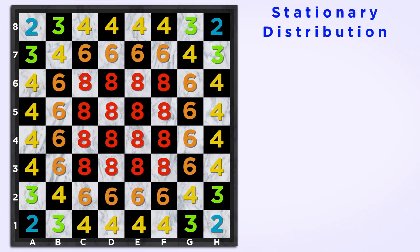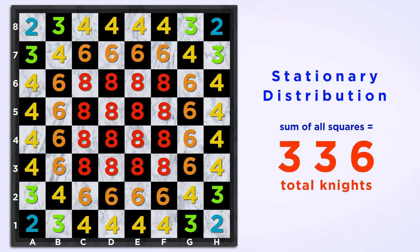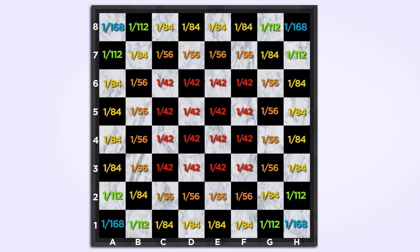This collection of knights is very close to the stationary distribution. All we have to do is figure out what fraction of knights are on each square. The total number of knights is 336. So, we divide the number of knights on each square by 336 to get the fraction. Now, this is the stationary distribution for the Markov chain.